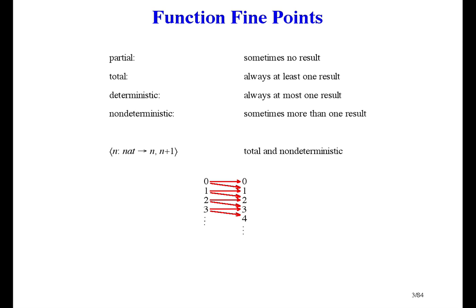Here is an example function that is both total and non-deterministic. For each n in nat, it produces two results, n and n plus 1. So if we apply it to 3, we get both 3 and 4.